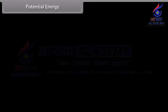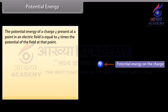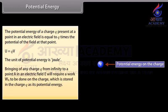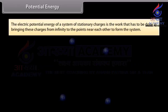Potential energy: The potential energy of a charge Q present at a point in an electric field is equal to Q times the potential of the field at that point: U equals QV. The unit of potential energy is joule. Bringing any charge Q from infinity to a point A in an electric field requires work W_A to be done, which is stored in the charge Q as its potential energy: U_A equals QV_A. The electric potential energy of a system of stationary charges is the work that has to be done in bringing these charges from infinity to the points near each other to form the system.